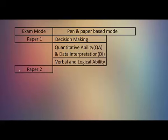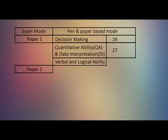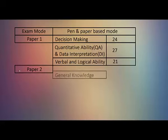In terms of question count for Paper 1: Decision Making has 24 questions, Quantitative Ability and Data Interpretation has 27 questions, and the third section is Verbal and Logical Ability. This completes Paper 1.